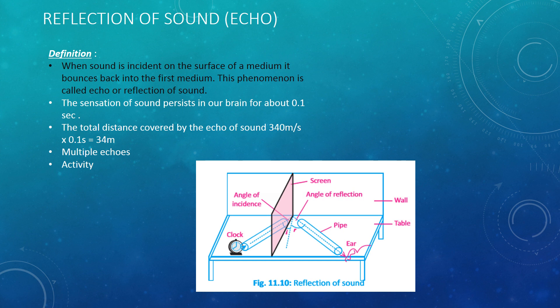The sensation of sound persists in our brain for about 0.1 second. We can find the total distance covered by the echo using the formula S = VT, where V is the speed of sound in air — 330 to 340 meters per second — and time is 0.1 second. This gives 34 meters. So the total distance covered by the reflection of sound is 34 meters, which means the obstacle should be at 17 meters — half of it — in order to have a clear echo.